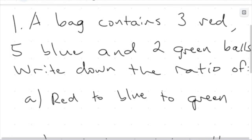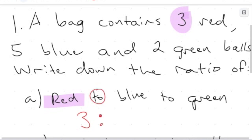We have red balls, and we're told in the question we have three of those. To start writing this down as a ratio, we're looking at the order of red to blue to green. So we write down the amount of red ones we have — that's three. We can write this using the ratio symbol. When we write ratios, we're shortening these big sentences into a nice compact expression.